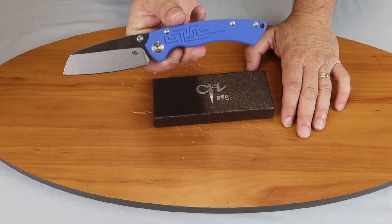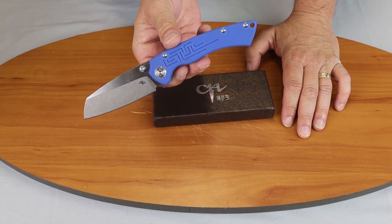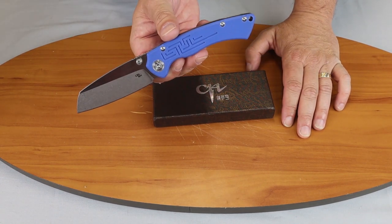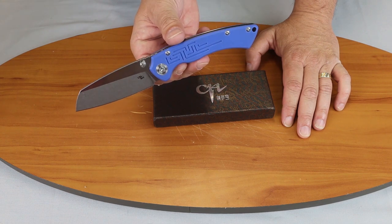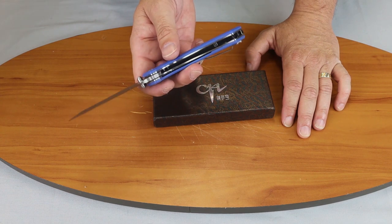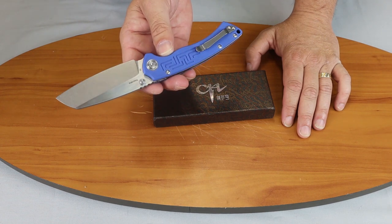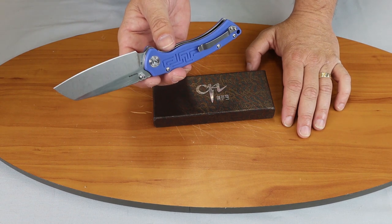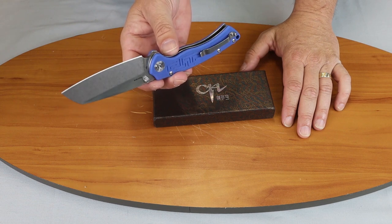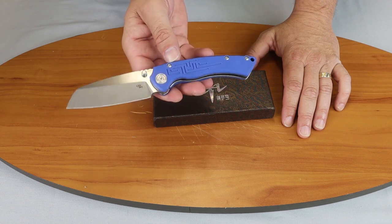It's 8.39 inches overall. The blade is a 3.75 inch D2 steel. Has thumb studs or a front flipper like I mentioned. Has a blue G10 handle.